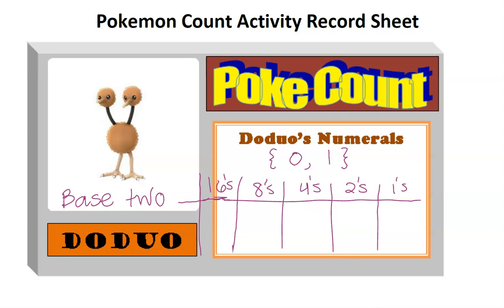What happens in the next place value? It will take 2 groups of whatever the place value is to move up to the next place. So there will be 2 groups of 16, and that would be 32.